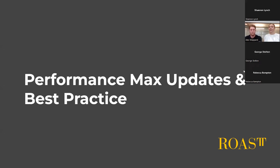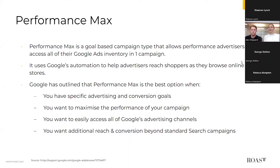First, we'll dive into Performance Max. Performance Max was introduced in 2020 during Advertising Week as a way to buy Google Ads across YouTube, Display, Search, Discover, Gmail, and Maps from a single campaign. It uses Google's automation to help advertisers reach shoppers as they browse online and in stores. Google outlines that Performance Max is the best option when you have specific advertising and conversion goals, want to maximize campaign performance, want easier access to all of Google's advertising channels, and want additional reach and conversions beyond standard search campaigns.